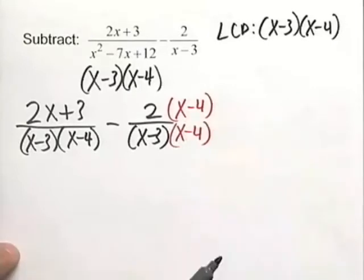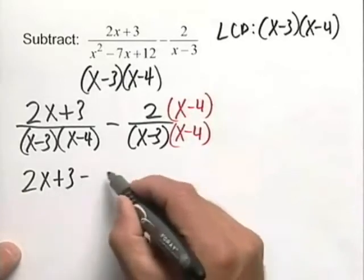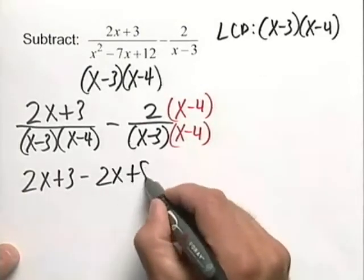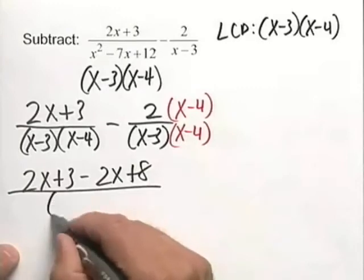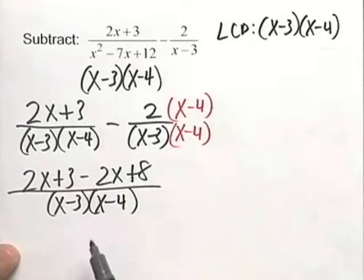Now we can go ahead and subtract these two rational expressions. From this we get 2x plus 3 minus 2x plus 8 all over our LCD, x minus 3, x minus 4. Simplifying in the numerator,